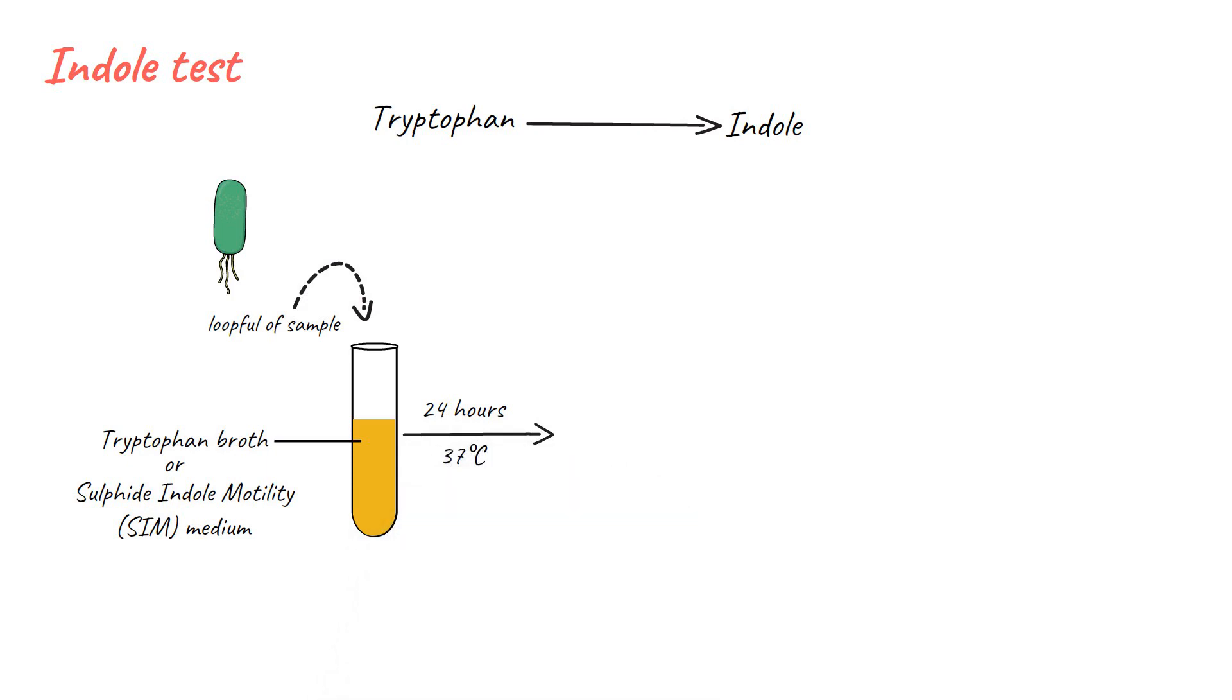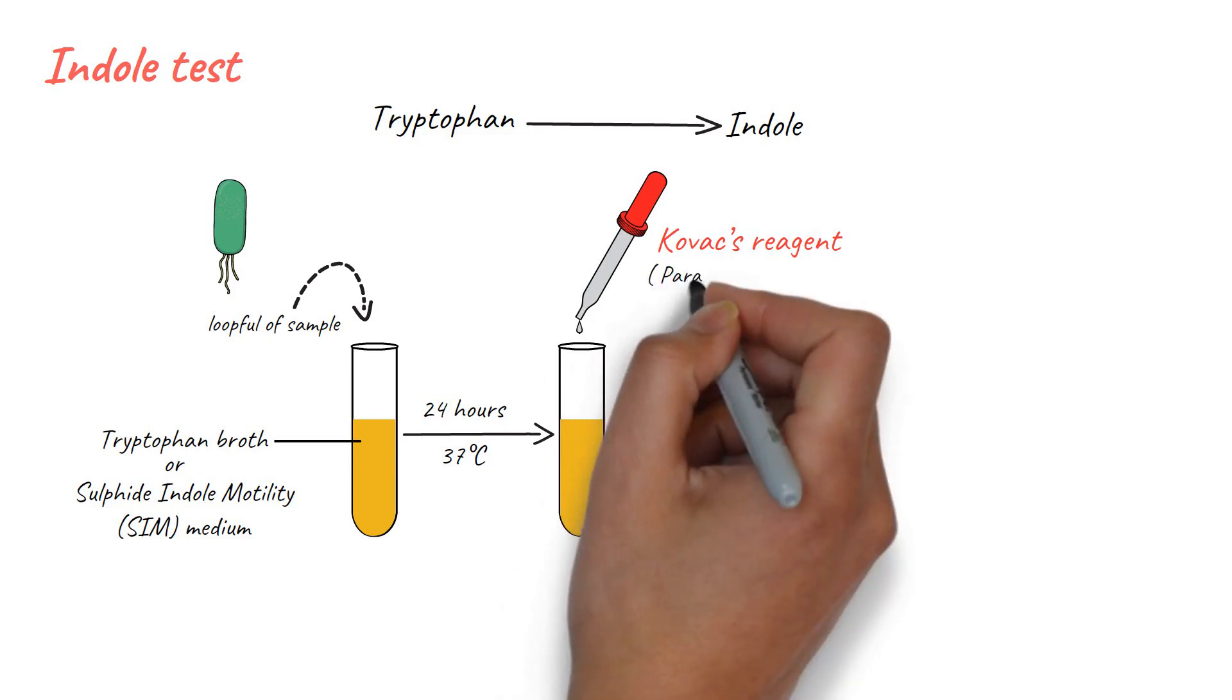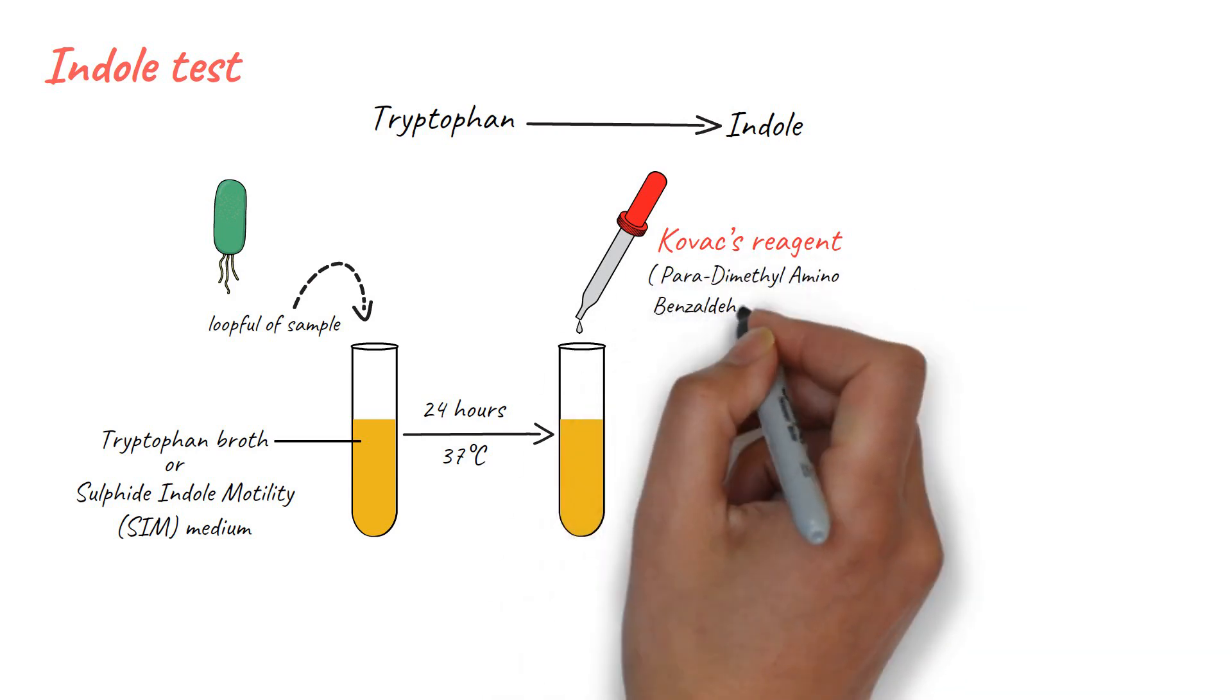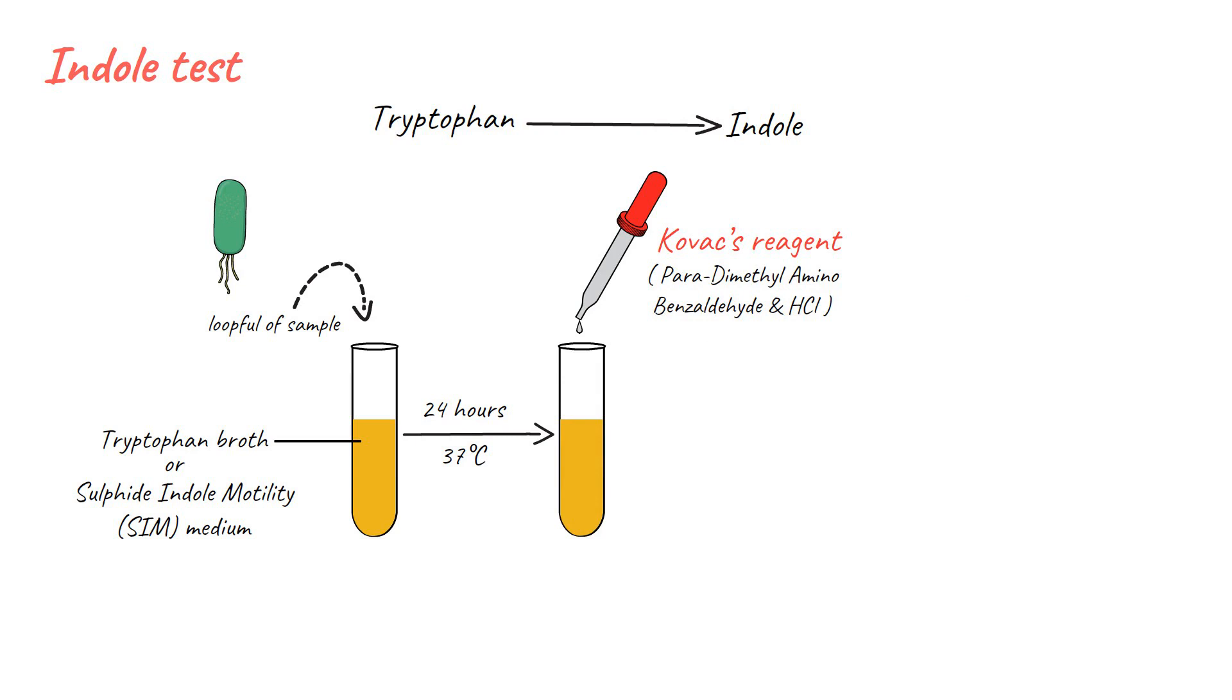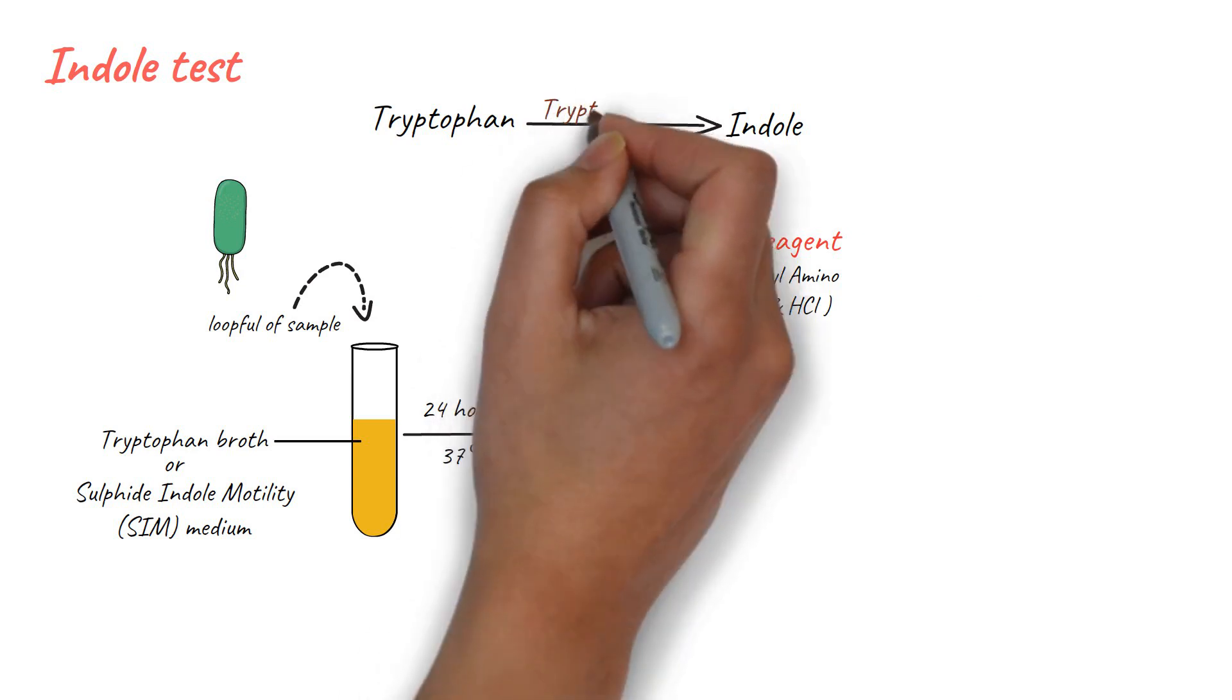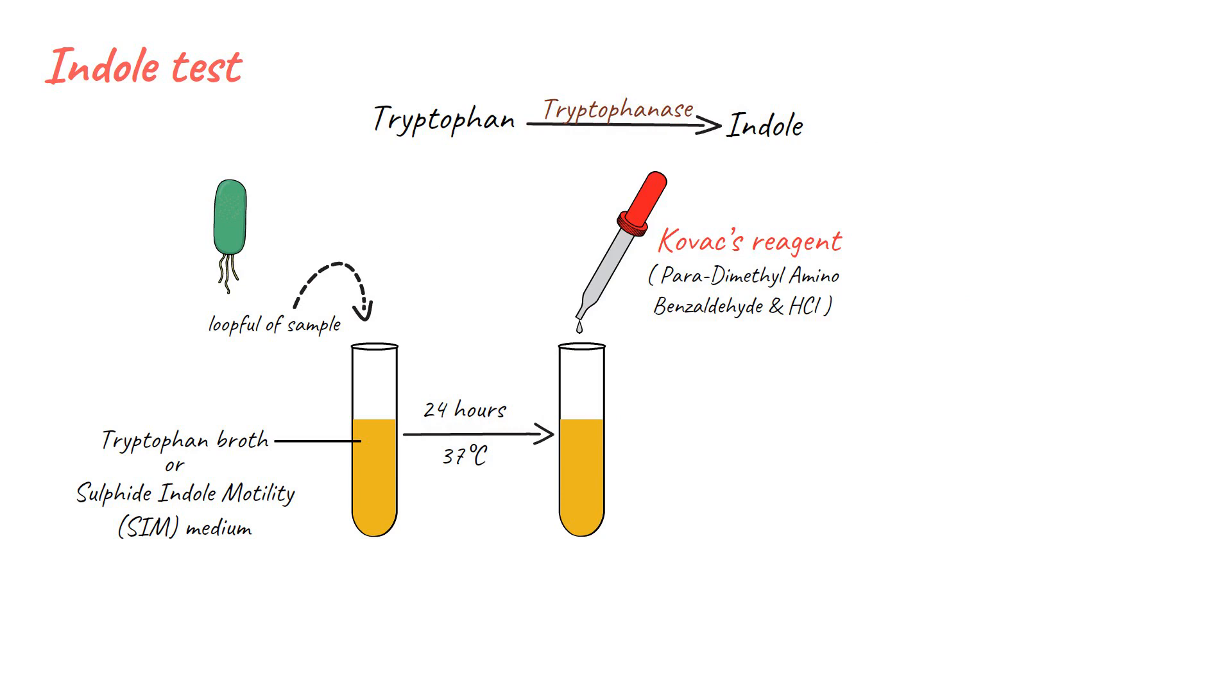After the incubation period, take out the tube and add a few drops of Kovacs reagent. Kovacs reagent consists of paradimethyl aminobenzaldehyde and HCl. If the bacteria is able to produce tryptophanase enzyme, it will degrade the tryptophan and produce indole, pyruvic acid, and ammonium.